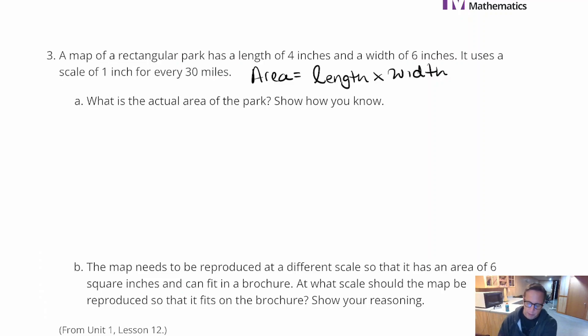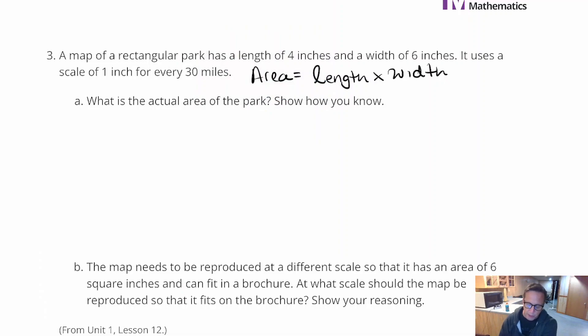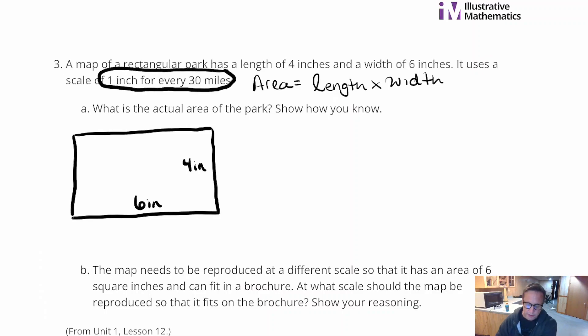What I'm going to do is just kind of create a rough sketch of the park. It's a rectangular park that is 4 by 6. This is not going to be perfectly to scale, but the numbers I'm going to put in here should match. We've got 4 inches right here, and I'm going to put 6 inches here.